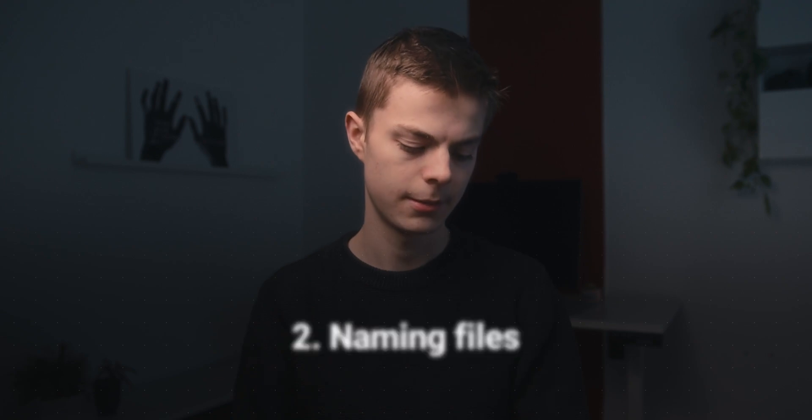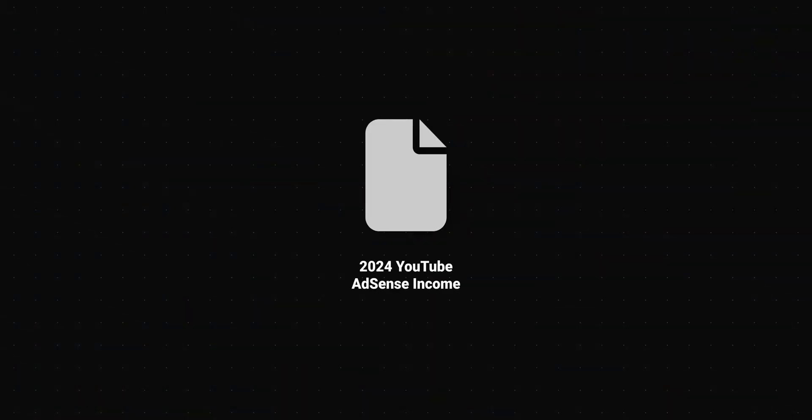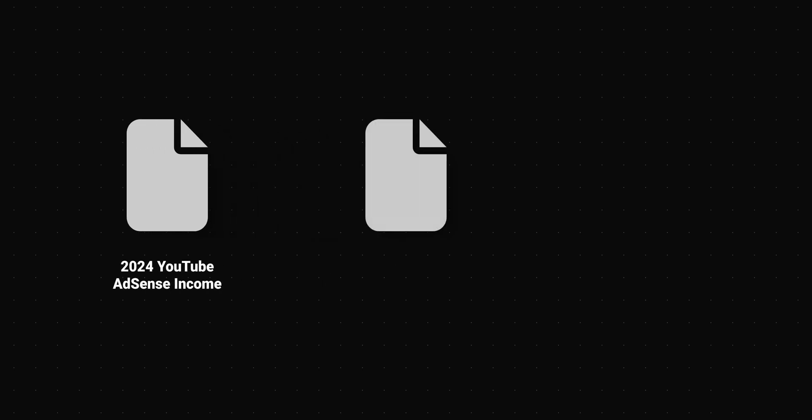Rule two: naming files. When naming files be specific but not overly specific, so you can search for the file but it doesn't clutter the file name. A good example would be '2024 youtube adsense income'. A bad example would be '2024 finances youtube adsense income taxes government calculation'. Remember, some keywords are already implied by the folder the file is placed in, so don't clutter your file names.